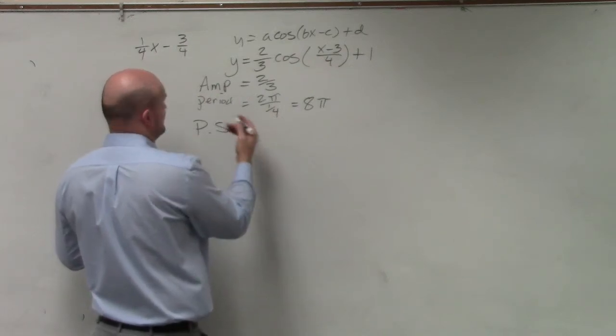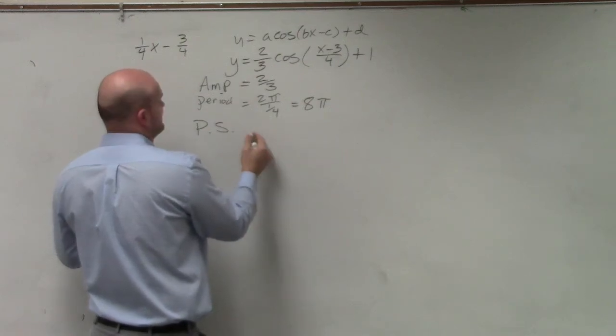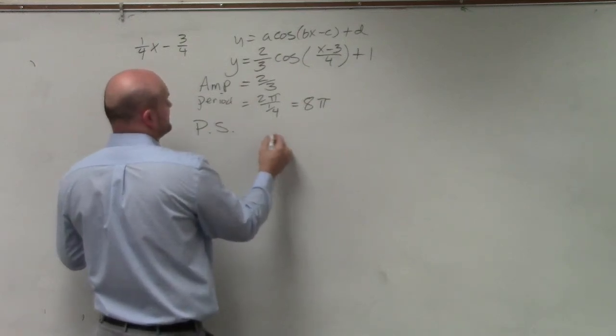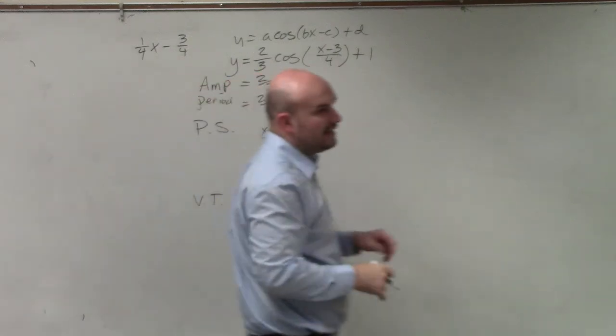Actually, it still works out. x minus 3 over 4, 1/4. It actually still works out. So you could set it equal to 0 and then solve.